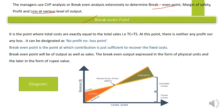Break-even point एक ऐसा point होता है जहाँ total cost, total sales के exactly equal होती है — that means TC equals TS। यह ऐसा point है जहाँ ना तो profit होता है ना ही loss — इसलिए इसे no profit no loss point कहते हैं। दूसरे शब्दों में, break-even point वो point है जहाँ contribution just sufficient होता है कि वो सिर्फ fixed cost को recover कर सके — कोई surplus नहीं बचता, that means कोई profit नहीं। The break-even point is the point at which contribution is sufficient to recover the fixed cost।